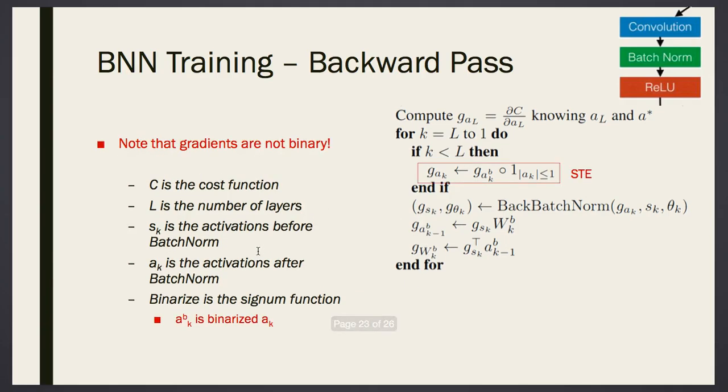So how do we update the weights? But before that, be careful. Although we have these values here, the gradients are never binarized because they are very small values. That's why we don't have any B superscript here. Gradients are never binary. We keep them non-binary.